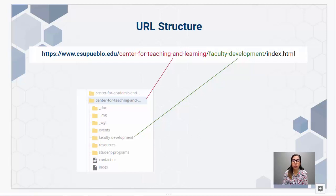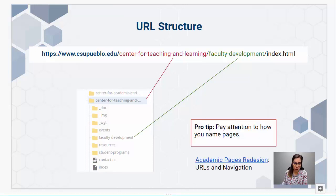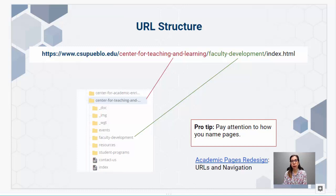Pay attention to where content falls in the URL. The root folder is what comes right after csupueblo.edu. If you were to read the URL, you should have a good idea of the type of content you're reviewing — that's what we strive for with naming conventions. Pro tip: pay attention to how you name any content you add inside root folders, because it shapes the URL and helps with SEO. Make sure the name of the page also matches the title of the page.